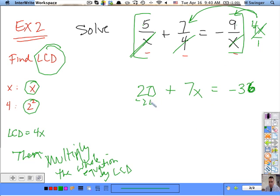That's all you do. So you're left with a normal. So minus 20. Minus 20. 7x equals, what is this? Negative 56. And then divide by 7. And then divide by 7. X equals negative 8.